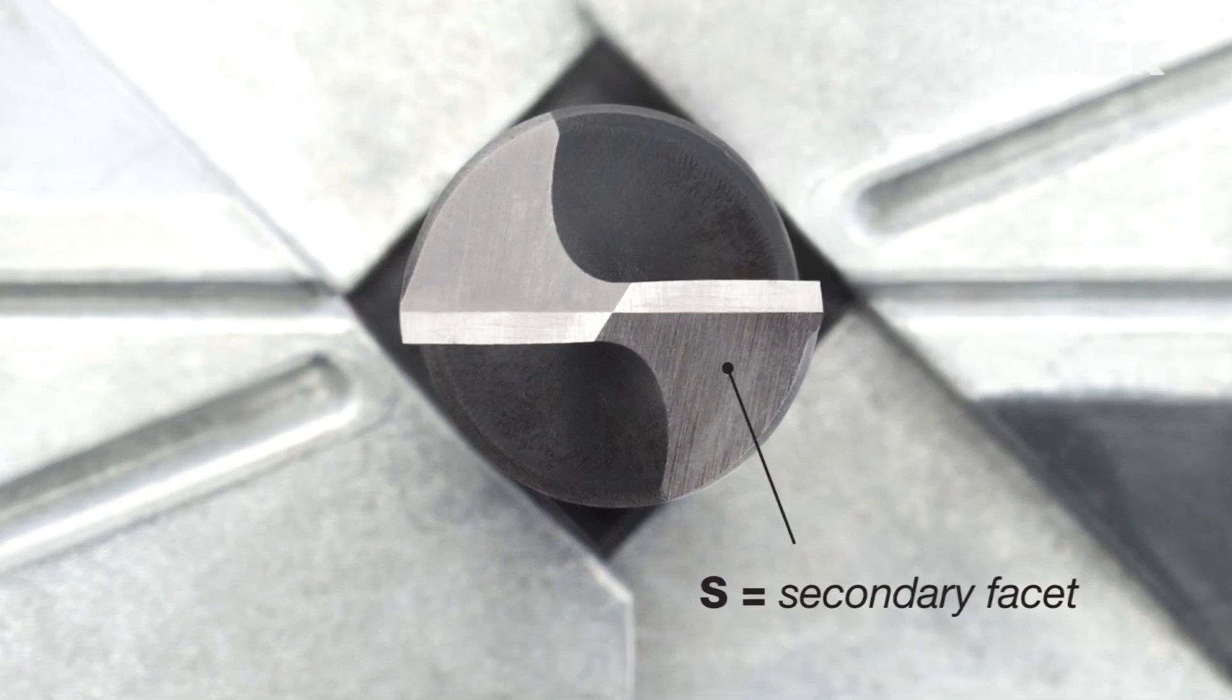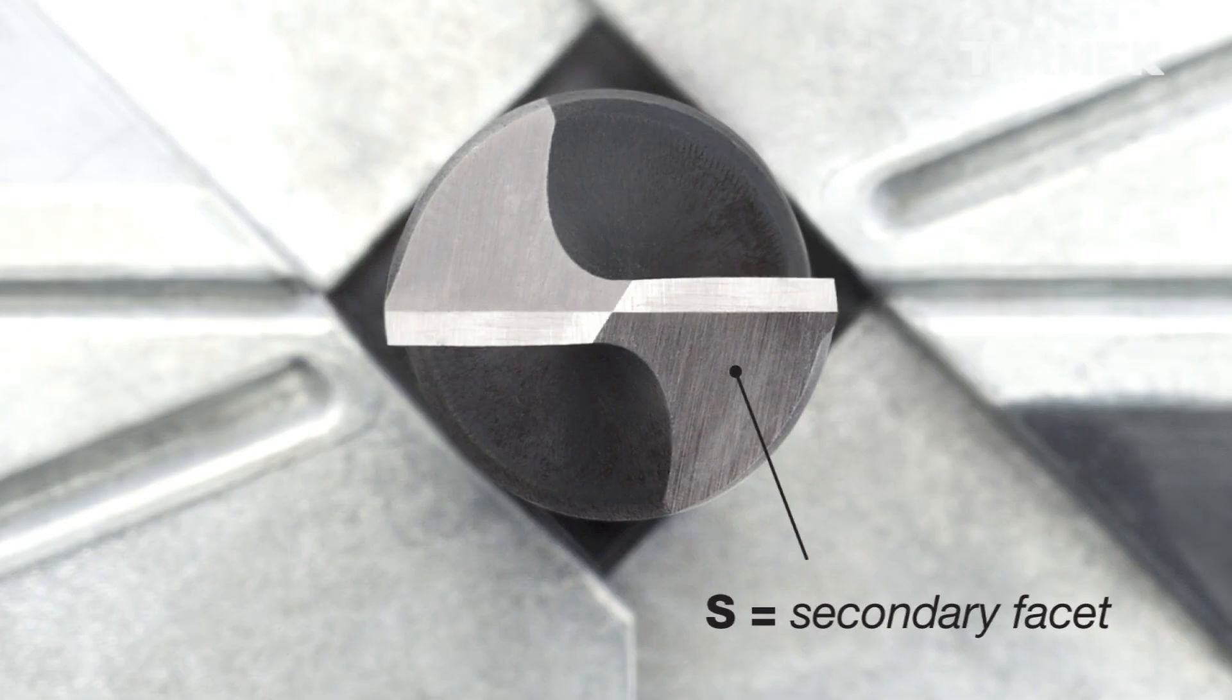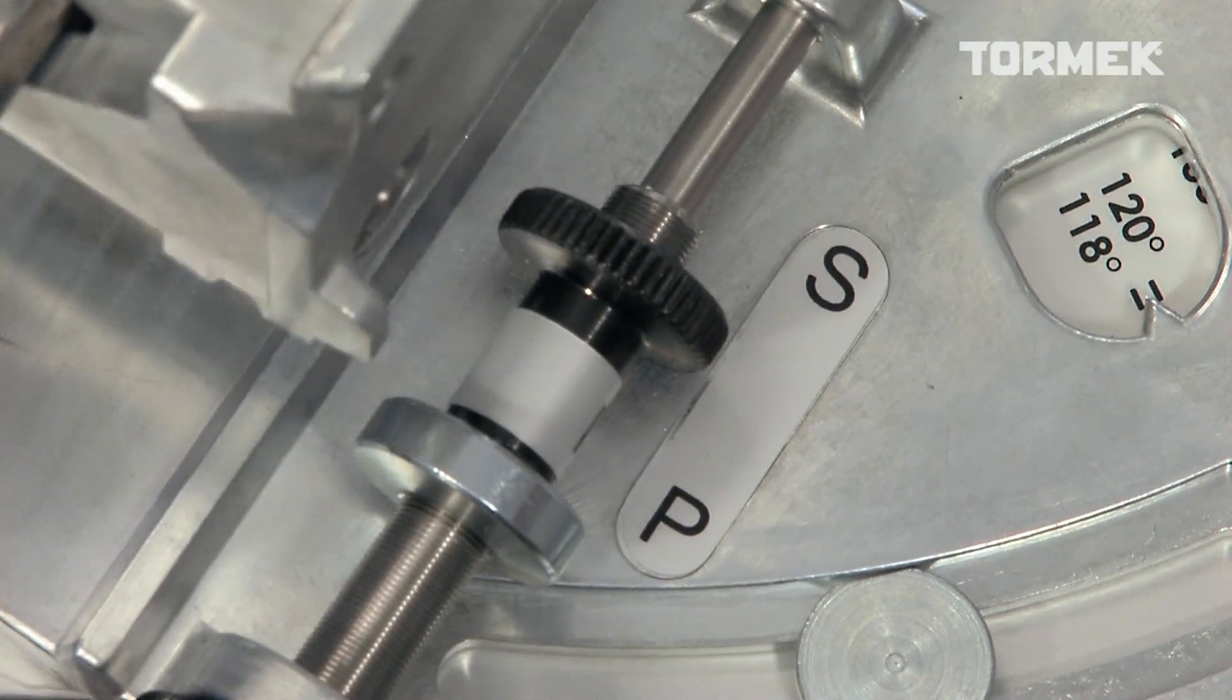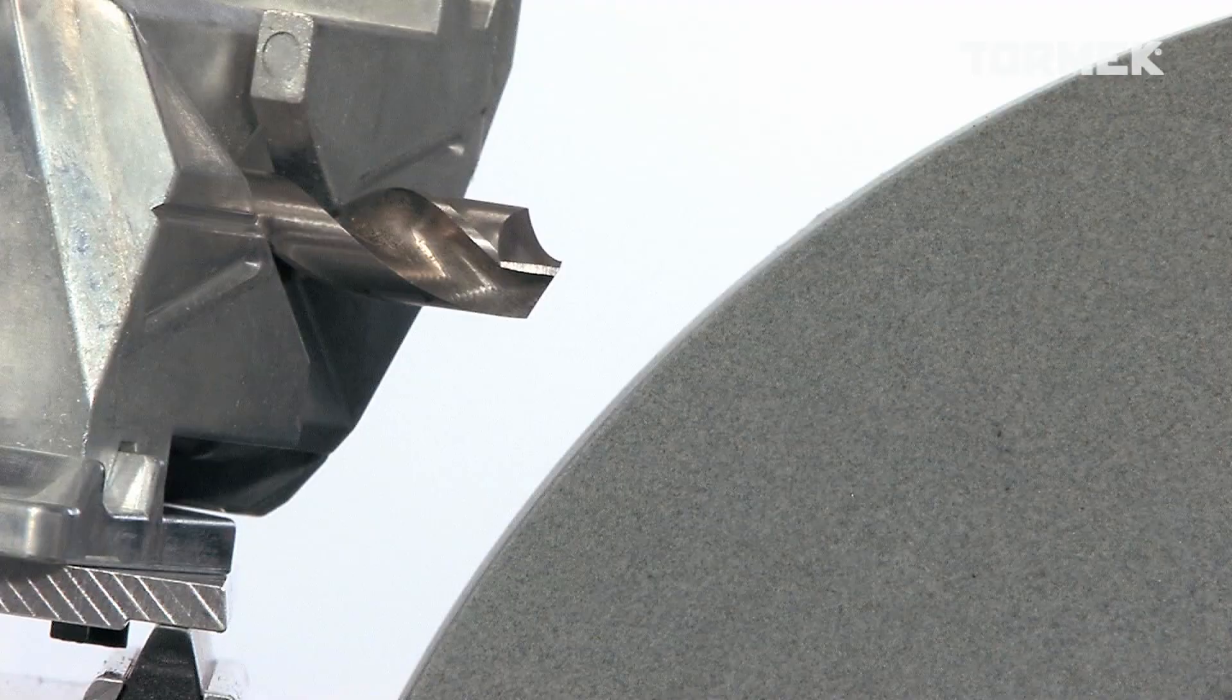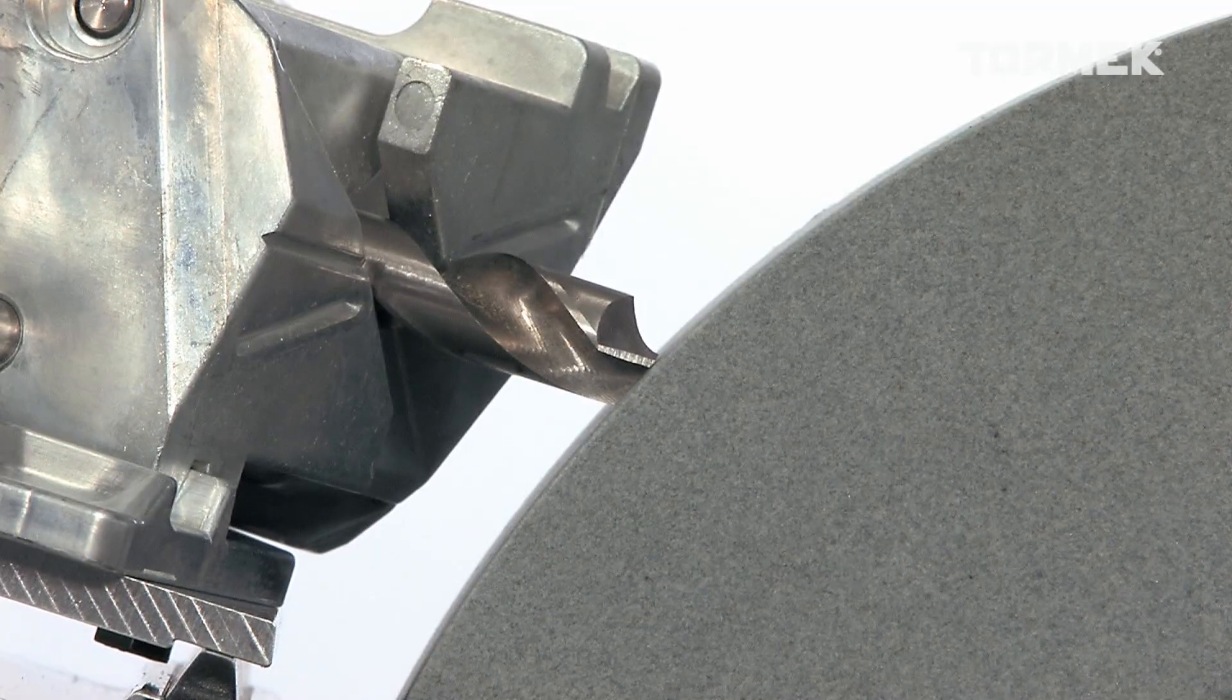Now it is time to grind the secondary facets and give the drill a point. Move the drill holder to the next stop marked S to sharpen the secondary facets. Tilt the base until the drill bit touches the grindstone and lock.